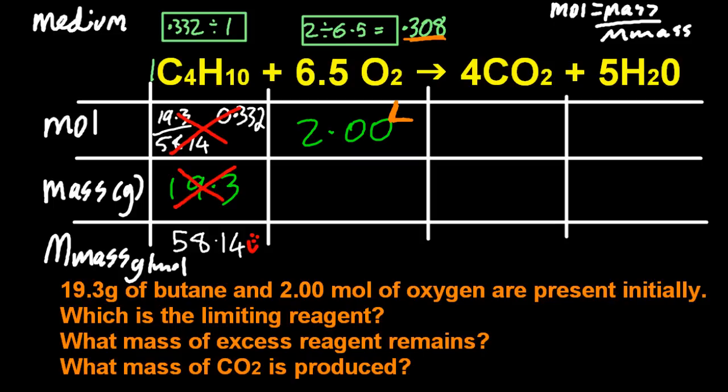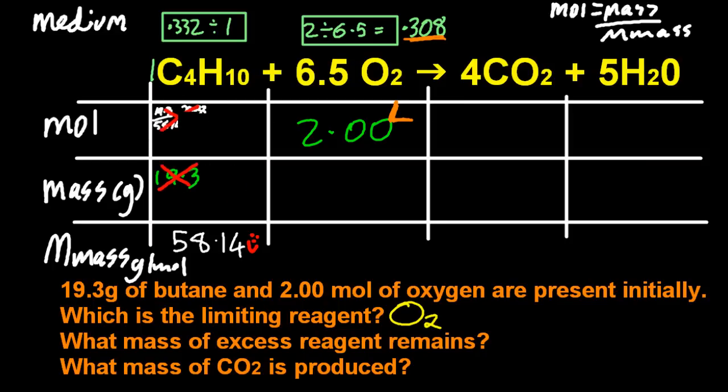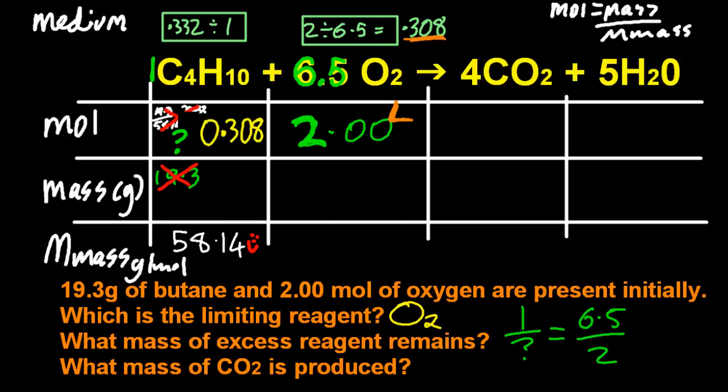Butane is excess. So, I put a big cross. X, X. It's wrong. Cross, cross. So, how much of my excess reagent, how much excess butane remains? I'll just make these smaller. Well, I put in 19.3. And I know that's too much. 19.3 grams. So, 6.5 is to 2. We're doing the ratio thing at the top line again. As 1 is to I don't know. Well, just cross multiply. 1 is to I don't know as 6.5 is to 2. And that comes out at 0.308.